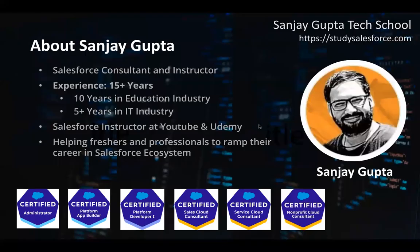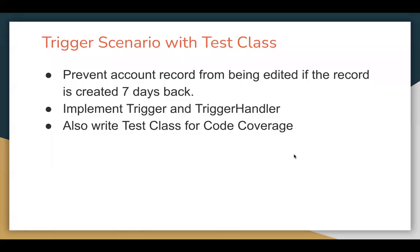Hello everyone, I am Sanjay Gupta. I welcome you to Sanjay Gupta Tech School. In this video, I am going to demonstrate how you can prevent an account record from being edited if the record is created seven days back. So all records created seven days back — if you try to update them, there will be an error message displayed on the UI. This is a custom validation I'm going to implement with the help of a trigger, and later I will implement the test class for code coverage.